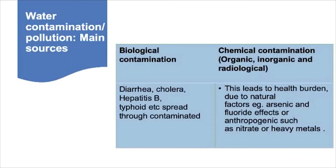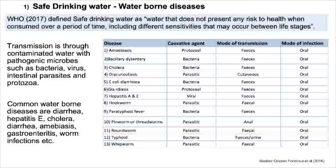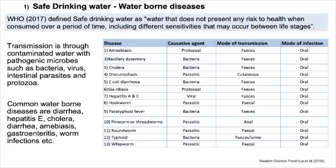Water pollution is mainly due to biological contamination leading to diarrhea, cholera, hepatitis B and typhoid, spread through contaminated water. The second type is chemical contamination, where both organic, inorganic and radiological pollutants lead to health burden — for example, arsenic and fluoride from natural factors, and nitrates or heavy metals from anthropogenic sources. The WHO defines safe drinking water as water that does not present any risk to health when consumed over a period of time. Disease transmission occurs through contaminated water with pathogenic microbes such as bacteria, viruses, intestinal parasites and protozoa. A detailed table shows the diseases spread through contaminated water, their causative agents, and modes of transmission and infection.